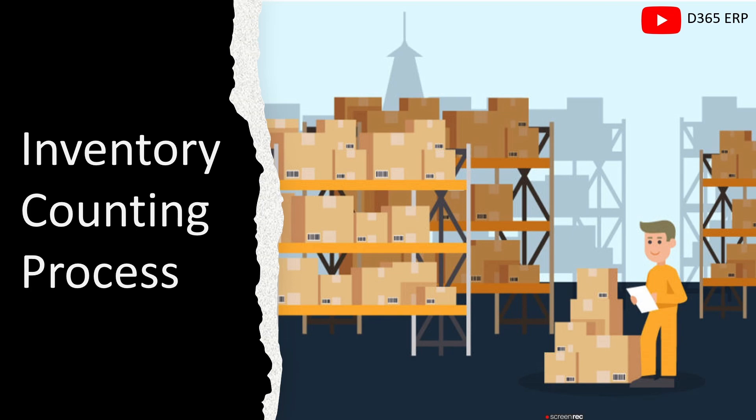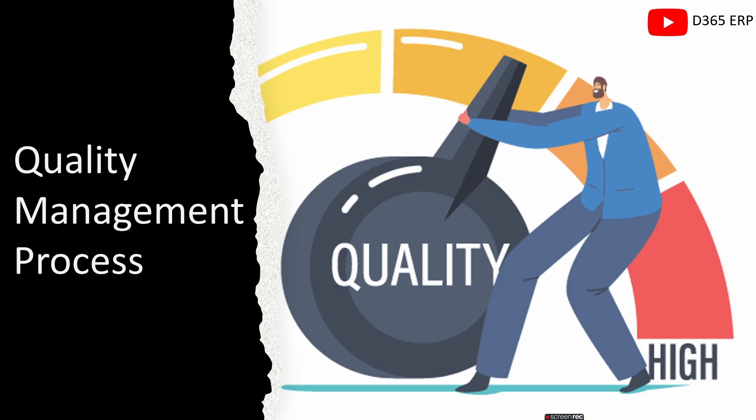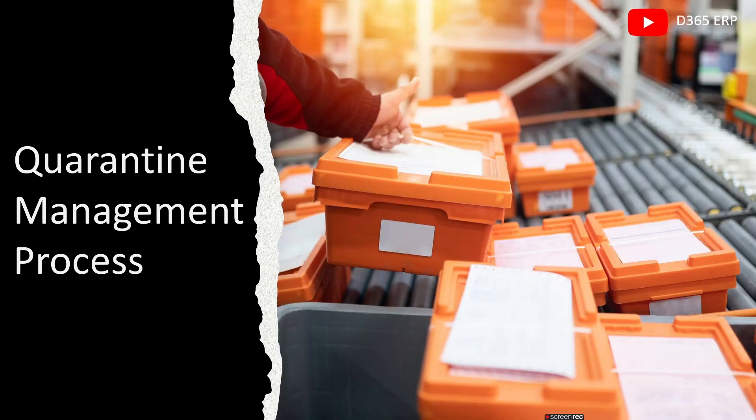Ensuring precise inventory records, after inventory counting we will next discover the quality management process in Dynamics 365 Finance and Operations. We will learn how to establish and enforce quality control measures for your inventory items. I'll also show you inventory blocking, which allows you to prevent the usage or sale of a specific item for quality reasons. We will also discuss the quarantine management process — in the first episode we will create a quarantine warehouse, which will be used in the quarantine management process.